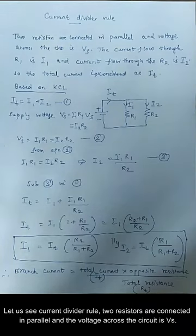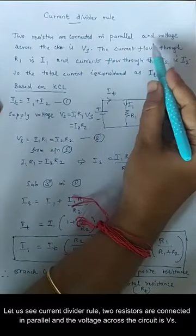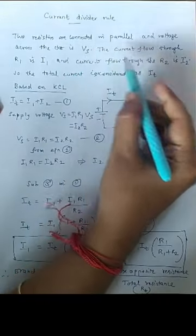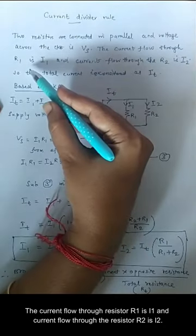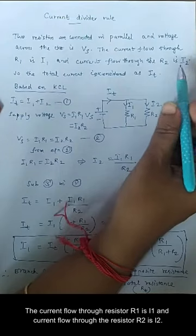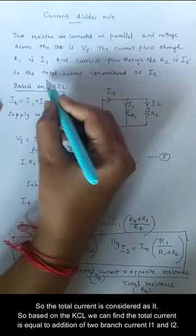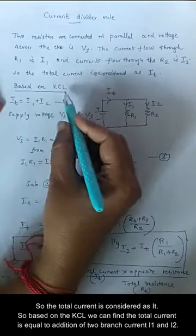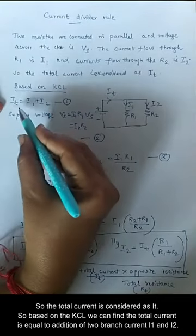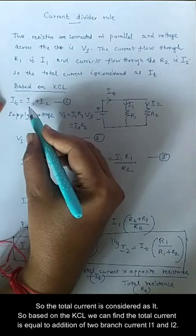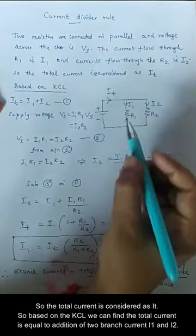Let us see the current divider rule. Two resistors are connected in parallel and the voltage across the circuit is Vs. The current flow through resistor R1 is I1 and current flow through resistor R2 is I2. The total current is considered as I. Based on KCL, the total current is equal to the addition of two branch currents I1 and I2.